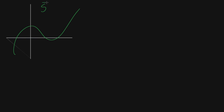In the last video, I started to talk about the formula for curvature. Just to remind everyone of where we are: you imagine some kind of curve in two-dimensional space, parameterized by a function s of t, so every number t corresponds to some point on the curve. For the curvature, you start thinking about unit tangent vectors. The curvature, denoted by the Greek letter kappa, is the rate of change of those unit vectors — how quickly they're turning in direction — not with respect to the parameter t, but with respect to arc length ds.